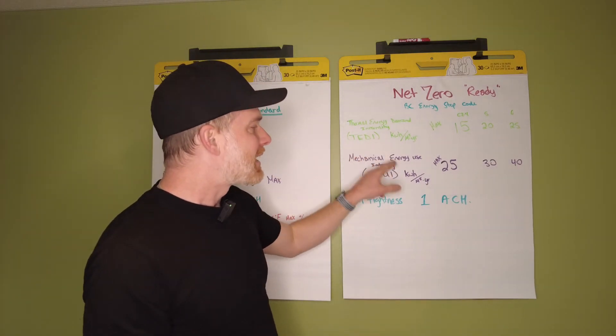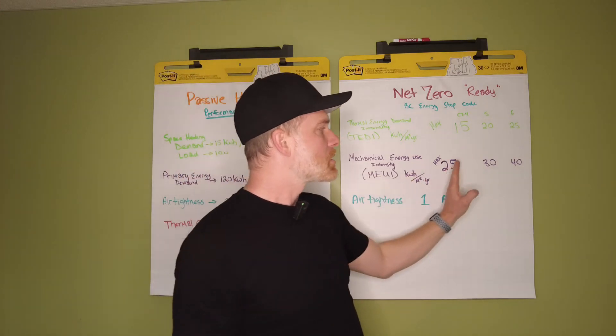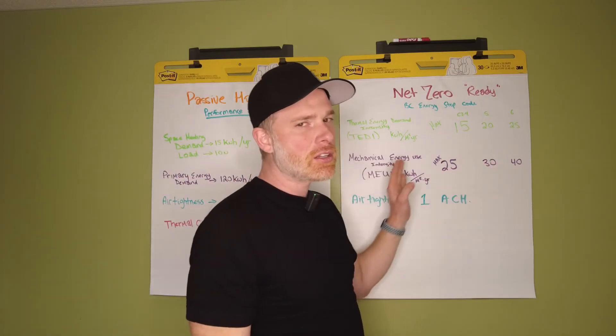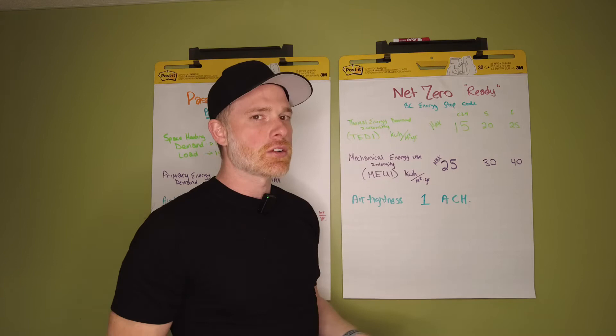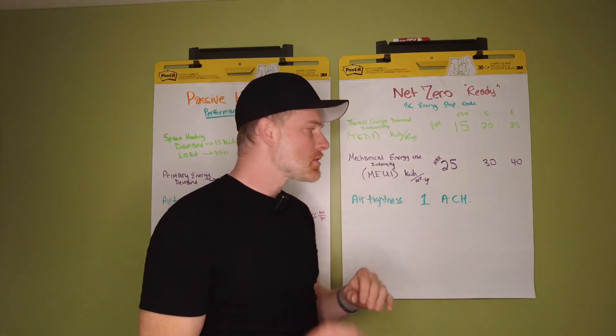Then they talk about Mechanical Energy Use Intensity, again measured in kilowatt hours per year. You'll notice that by climate zones, they give you a little bit more tolerance on how much energy your mechanical systems, air conditioning, and heating systems are able to use.